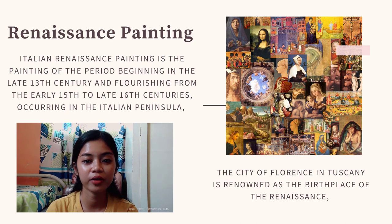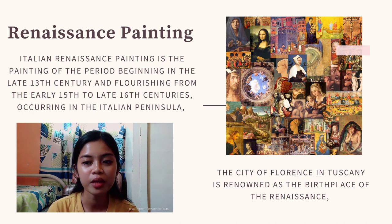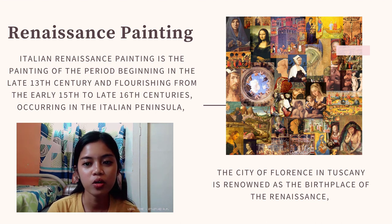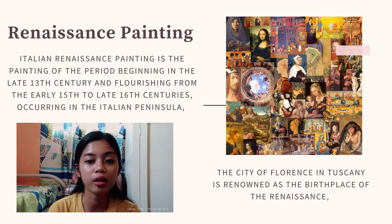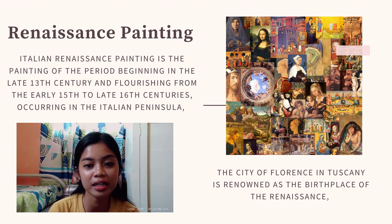Let us proceed to Italian Renaissance painting. In this period, beginning in the late 13th centuries and flourishing from the early 15th to late 16th centuries, occurring in the Italian peninsula — which was at that time divided into many political states — the painters of Renaissance Italy were often attached to particular courts and loyalties to particular towns, which impacted their diplomatic status and the disseminating of artistic and philosophical ideas.